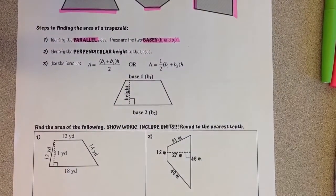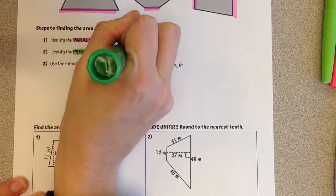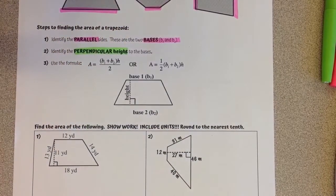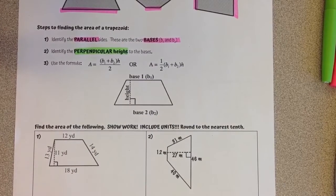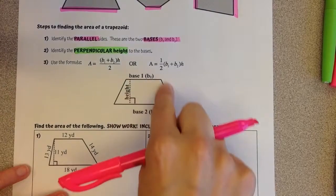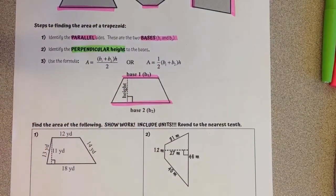Then we are going to identify the perpendicular height. I'm going to highlight another different color. So the first thing, if we look at this example here, is we'd find our set of parallel sides.